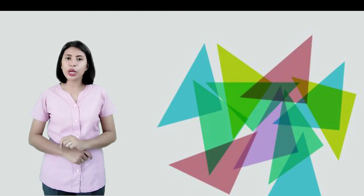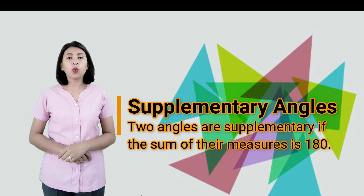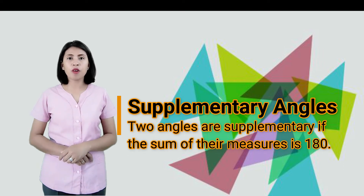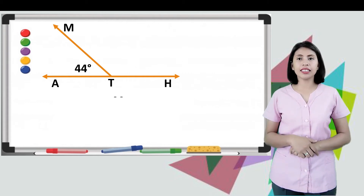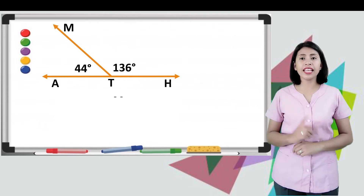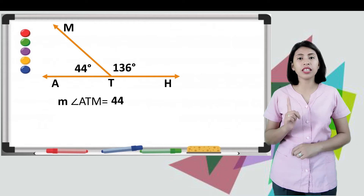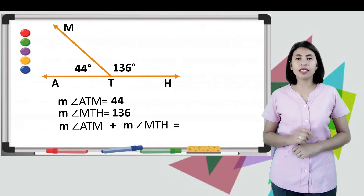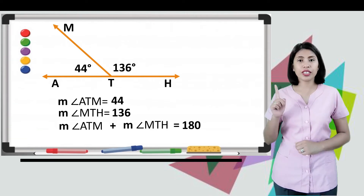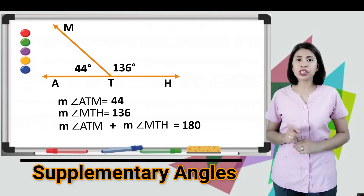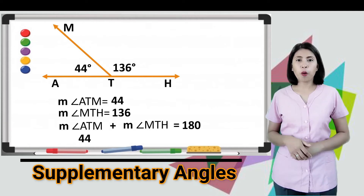For the second kind of angle pairs, we have supplementary angles. Two angles are supplementary if the sum of their measures is 180. Consider this figure. We have angle ATM and angle MTH, wherein measure angle ATM is equal to 44, and measure angle MTH is equal to 136. Let's check: 44 plus 136 is equal to 180, so these two angles are supplementary.